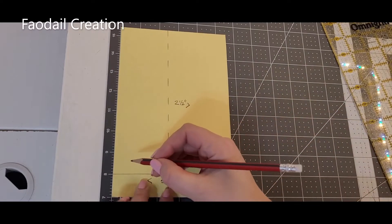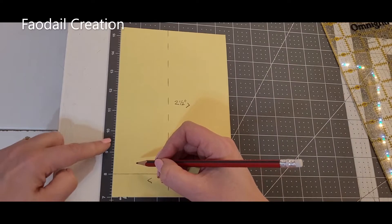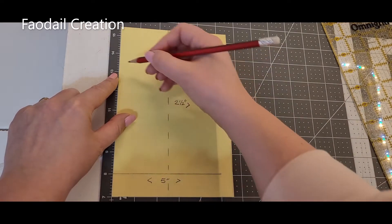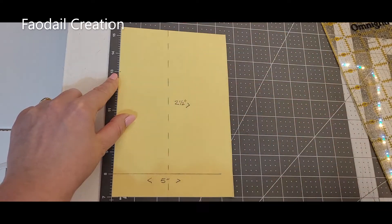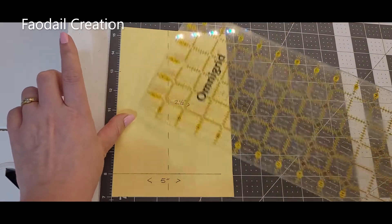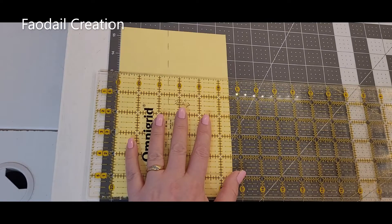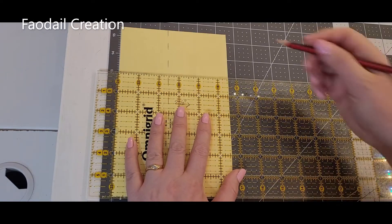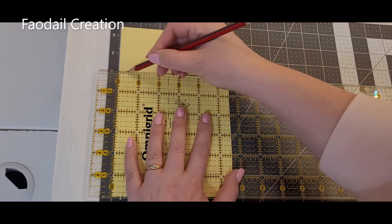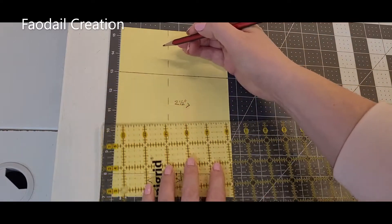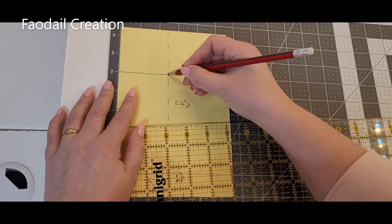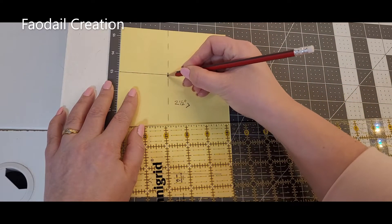Now what I want to do is count five, one, two, three, four, five, which is here, and I'm going to go all the way across. So this is the top here of my triangle.